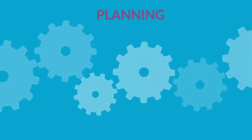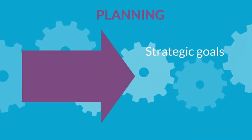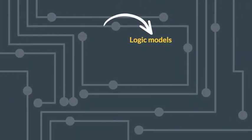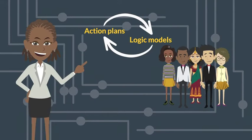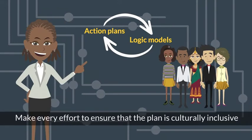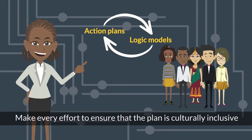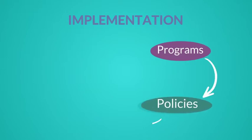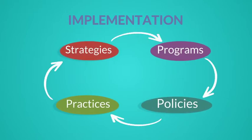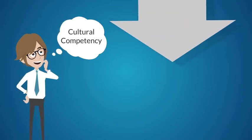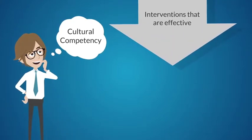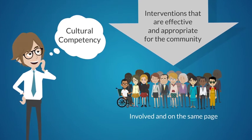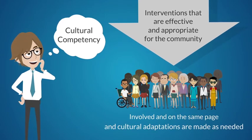The next phase is Planning. In this phase, we want to develop a comprehensive plan which includes strategic goals, objectives, logic models, and action plans. When developing logic models and action plans, it is essential to determine who may be missing from the process and to make every effort to ensure that the plan is culturally inclusive. Interventions that are effective and appropriate for the community ensure that all stakeholders and community partners are involved and on the same page, and cultural adaptations are made as needed.